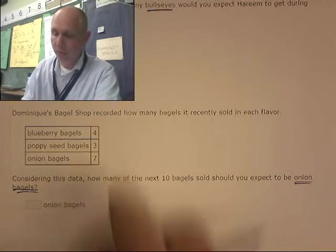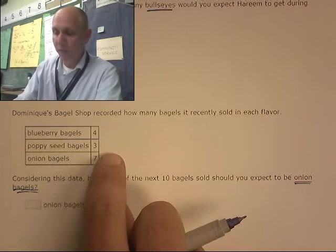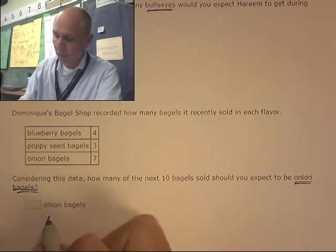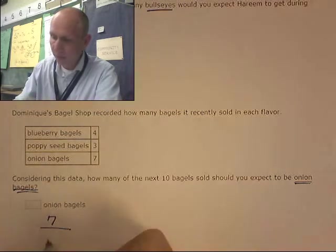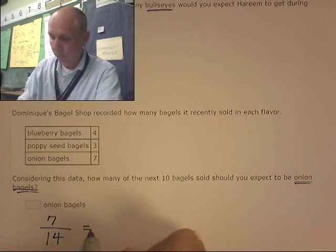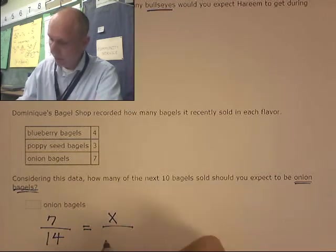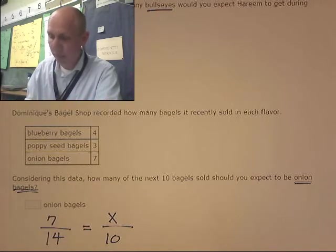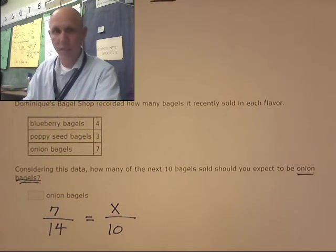Onion bagels. Well, looking up here, our original data, what's the probability of an onion bagel? Well, there are seven onion bagels out of 14 bagels total. Equals how many onion bagels we want out of 10 bagels. That's our proportion.